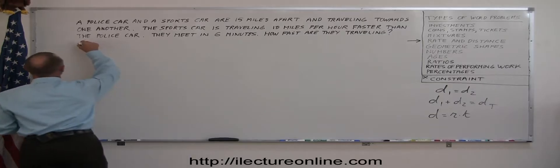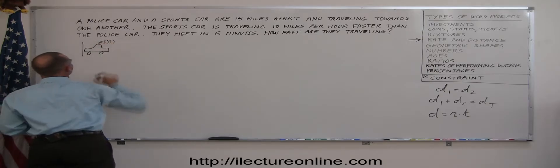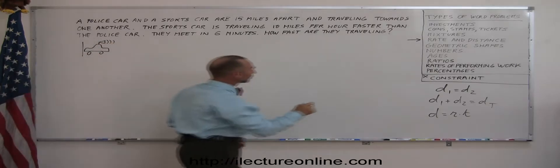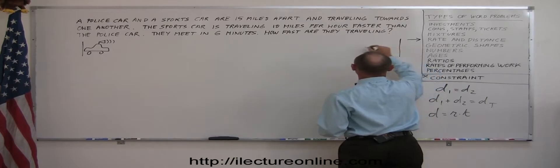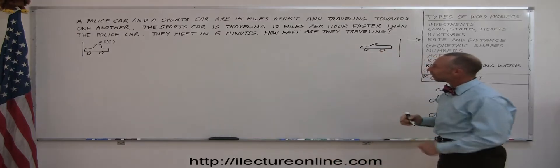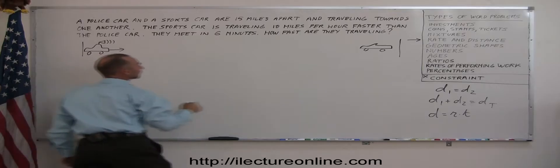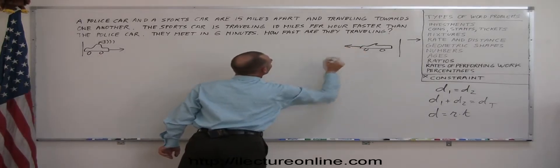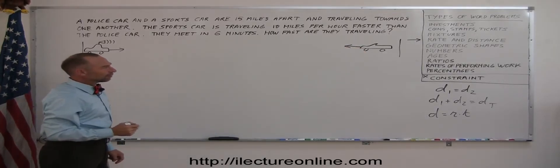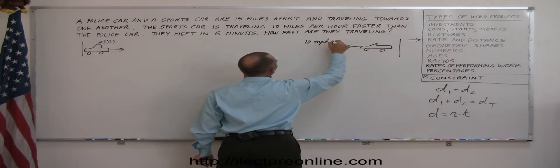So on one end, you have the police car and then the other end, you have the sports car. There, they're traveling in opposite directions. The sports car is traveling 10 miles per hour faster. So 10 MPH faster.